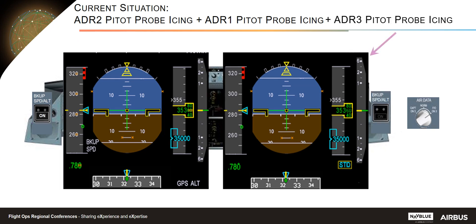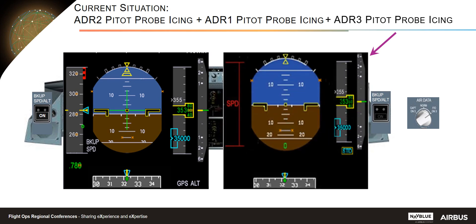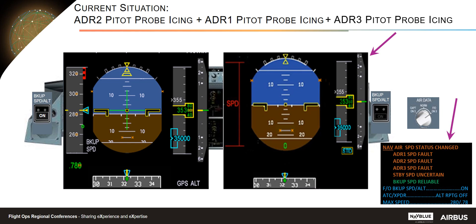Then ADR3 speed becomes faulty, so only the backup speed is reliable. Note that the standby speed is declared uncertain when ADR3 speed is faulty, since the same pitot probe is used by both circuits. The standby speed is not monitored, but the main cause of speed error being pitot malfunction means a link is made between both sources' data. The action is then to use the backup speed altitude push button on the FO side to recover speed on side 2.